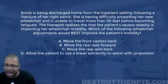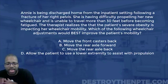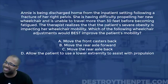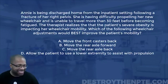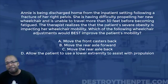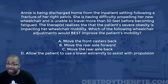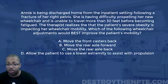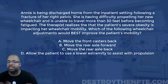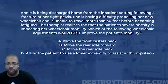D says allow the patient to use a lower extremity to assist with propulsion. Why don't I like D? Because the question is not asking for that. You have to answer what the question is asking — the question is asking for a wheelchair adjustment. It's not asking about what technique to teach the patient to assist with propulsion. It wants you to adjust the wheelchair, and D does not do that. D is obviously not the best answer.